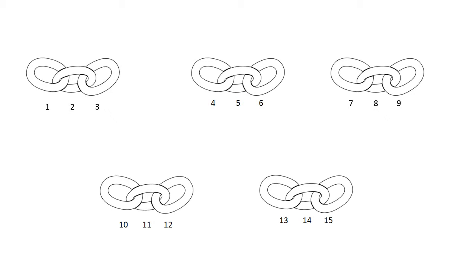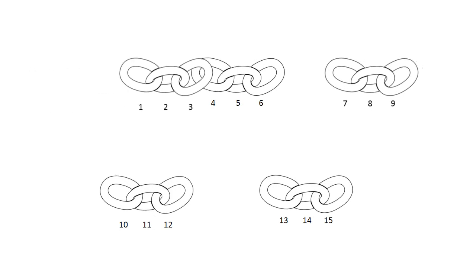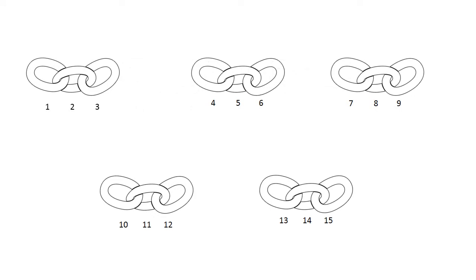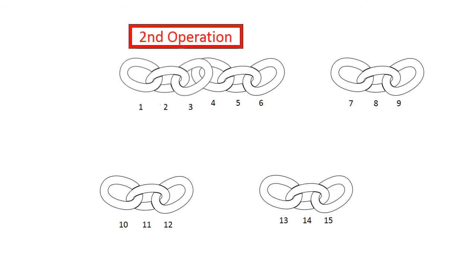You have 5 pieces of chain. You need to join it to make a long chain. You can open ring 3, then link it to ring 4. After you can unfasten ring 6 and link it to ring 7, and so on. Note that opening the chain is one operation, and linking the chain is also one operation. You could complete this task in 8 operations, but you can also do it in 6 steps. How to do that? You have 10 seconds.